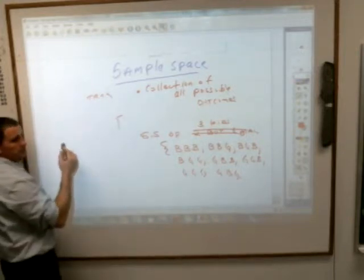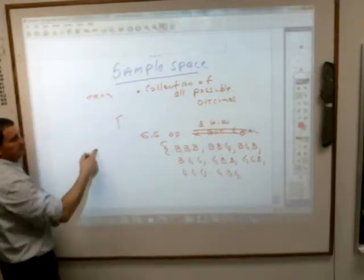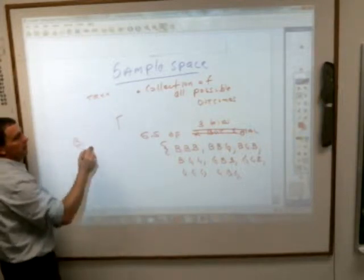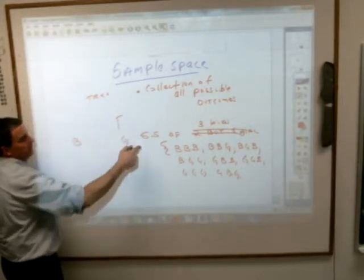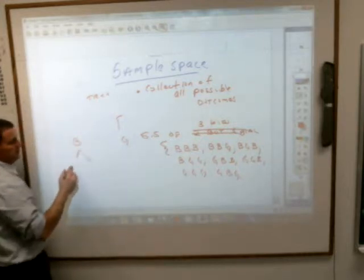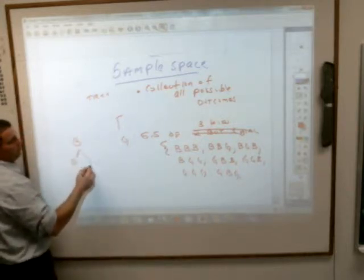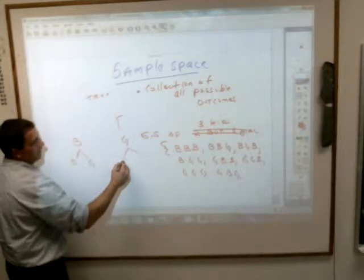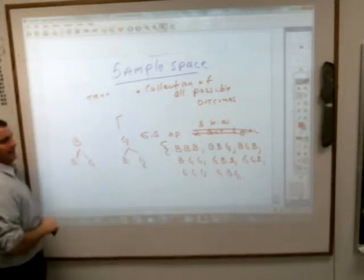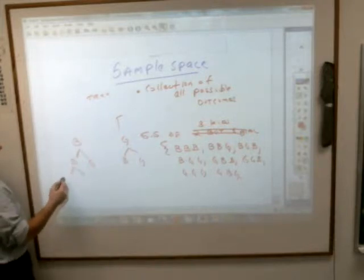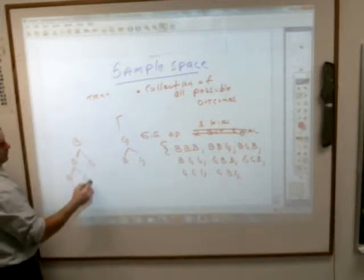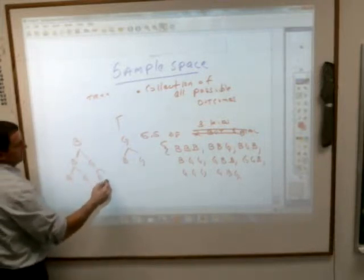In other words, for the first kid, what are some possibilities for the first kid? You could either get a boy or a girl. That's your first kid, right? Then for your second kid, after these, you could either get a boy or a girl. A boy or a girl. And then after that, after your second kid, for your third kid, you could either get a boy or a girl, or a boy or a girl.